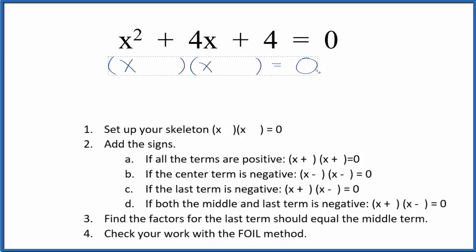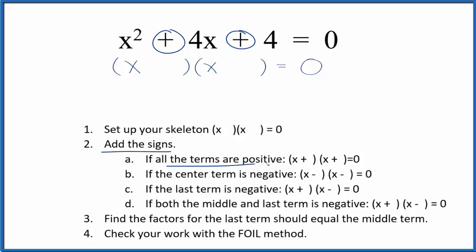Now we can figure out the signs that'll go in our skeleton equation, so we add the signs. If the terms are both positive—these are both positive, they're all positive—we're going to put positive signs in our skeleton equation like this.